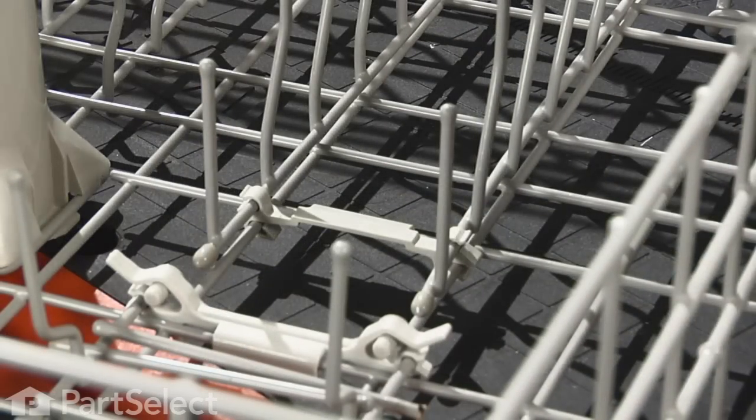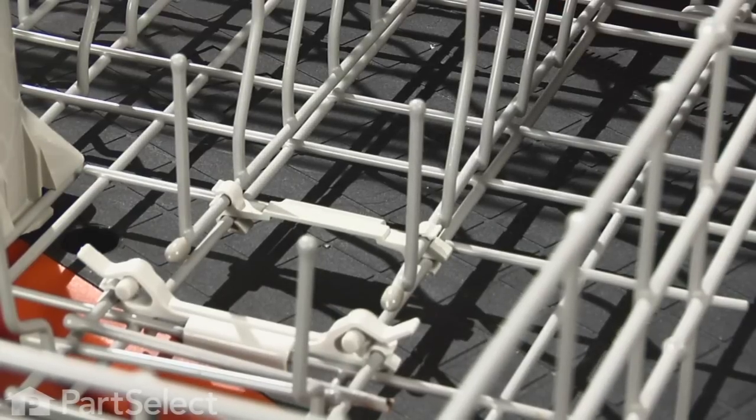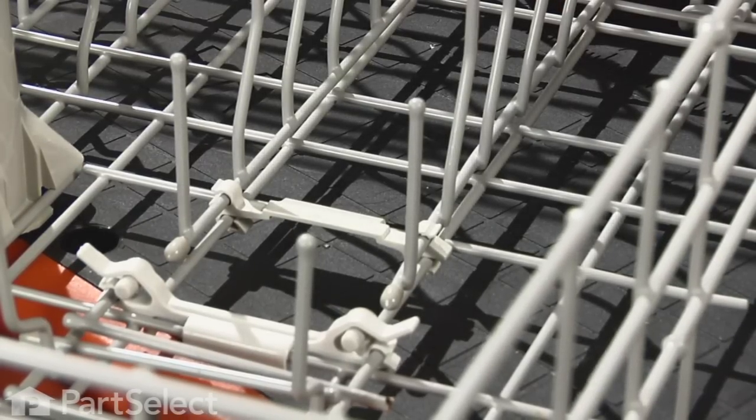On this dishwasher rack there are two fold-away tine pivots. Depending on which one you need to replace, the procedure is basically the same. They're identical parts.